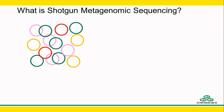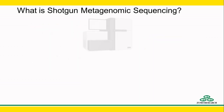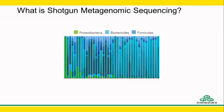The library preparation workflow is similar to regular whole genome sequencing, including random fragmentation and adapter ligation. A typical workflow for taxonomy analysis of shotgun metagenomic data includes quality trimming and comparison to a reference database comprising whole genomes or selected markers.